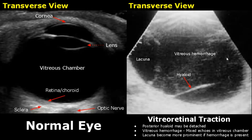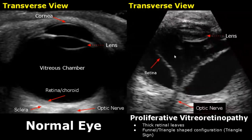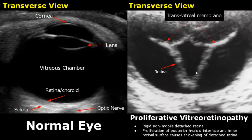This will also cause vitreous hemorrhage, appearing as mixed echoes in the vitreous chamber; the hemorrhage makes the lacuna more prominent. In this image we can see a detached hyaloid membrane with a lacuna present in the center. In proliferative vitreoretinopathy we will see thick retinal leaves and a triangle or funnel-shaped configuration — termed the triangle sign. The detached retina will be rigid and non-mobile due to proliferation of the posterior hyaloid interface and retinal surface making the retina thick and hardened. Here is another image showing the triangle sign with thick non-mobile retina.